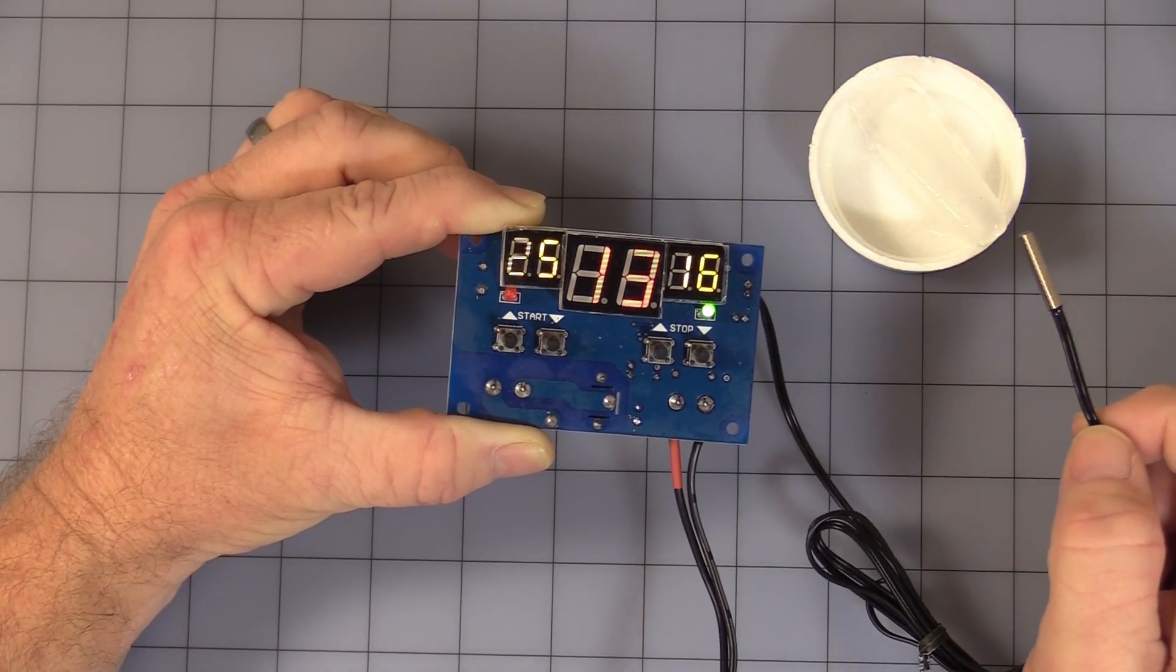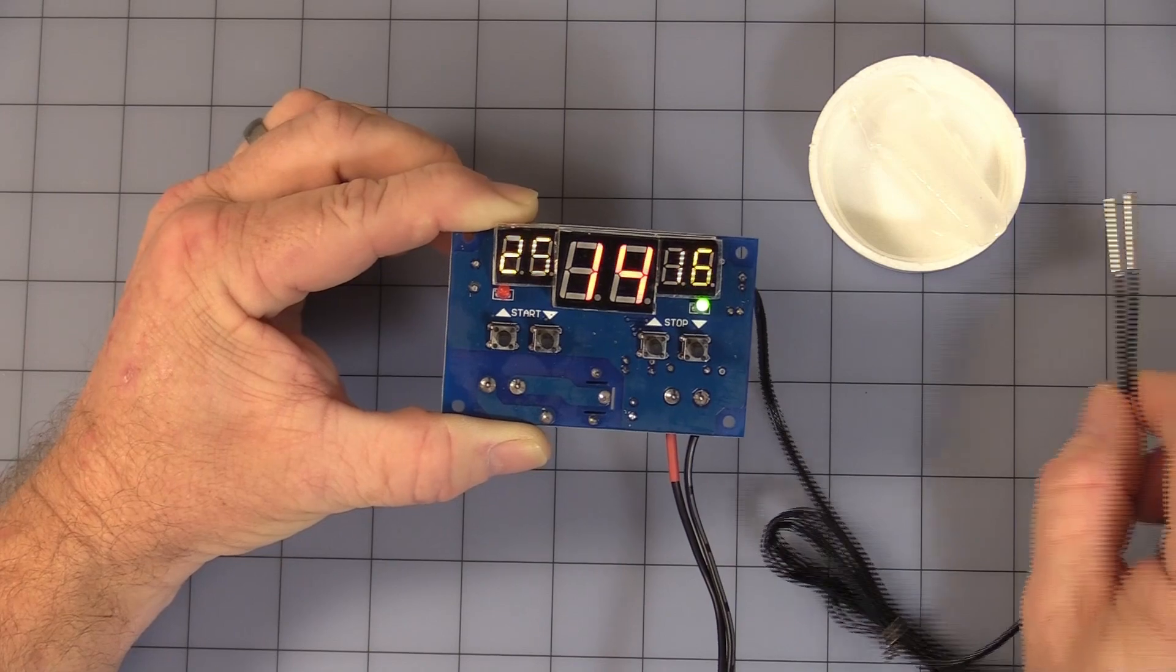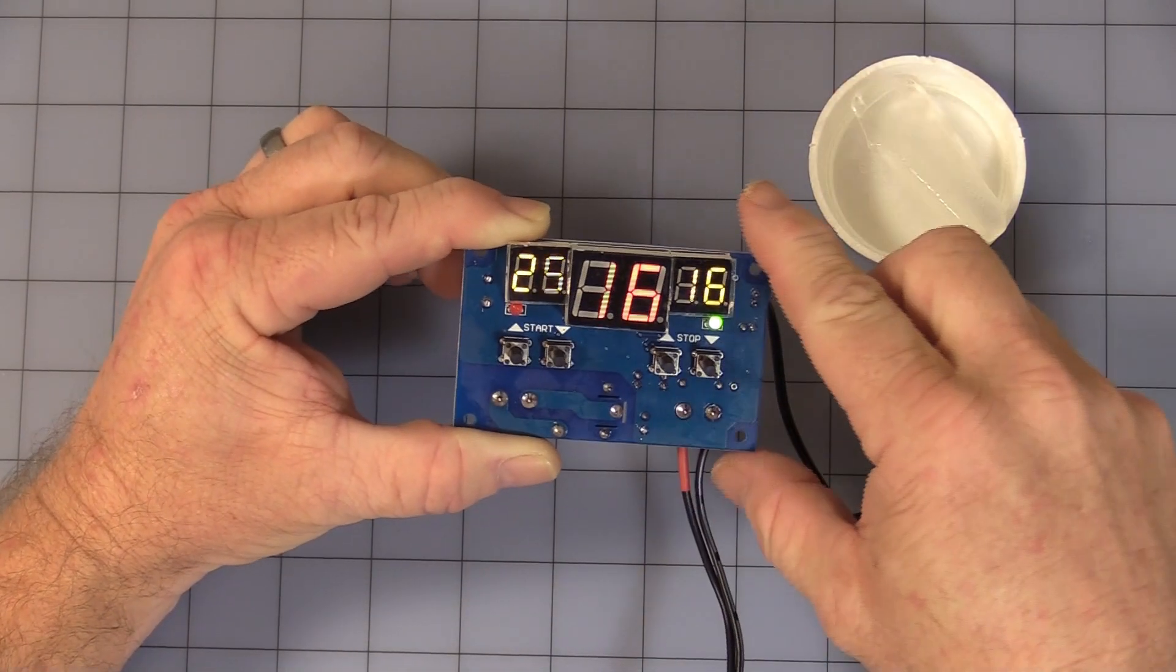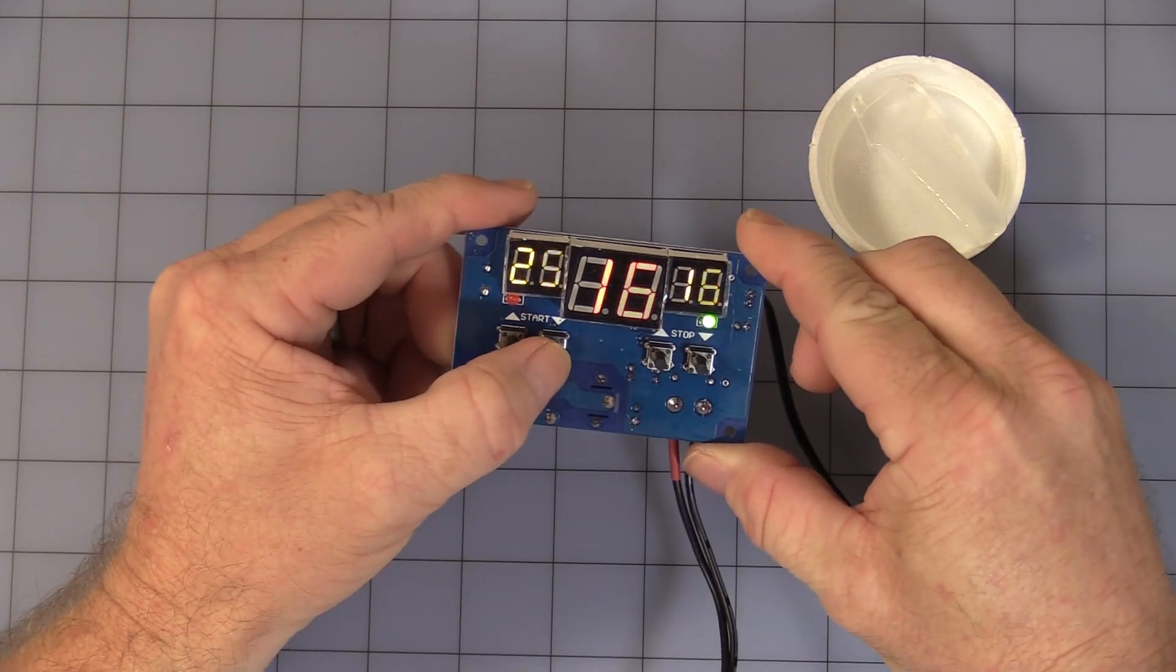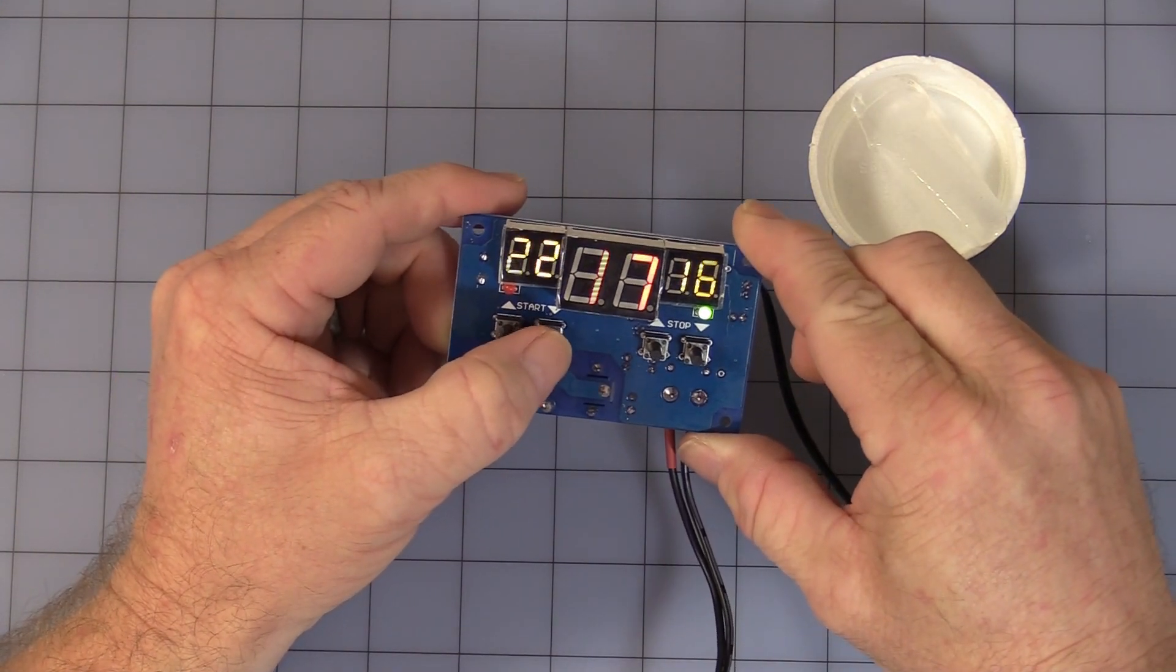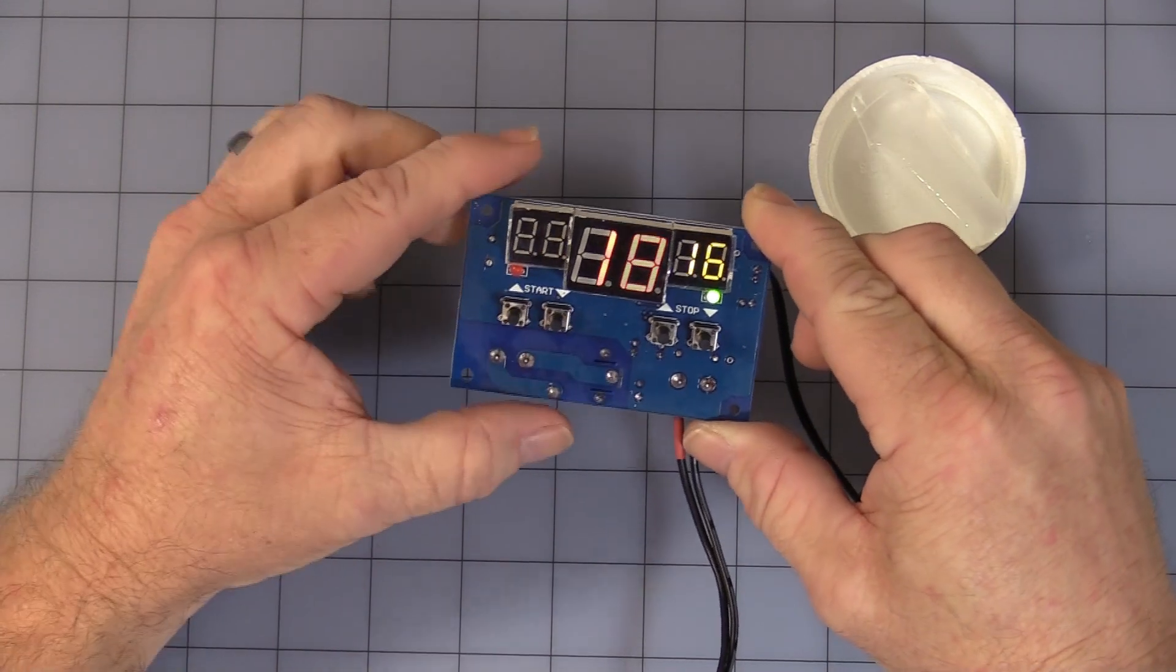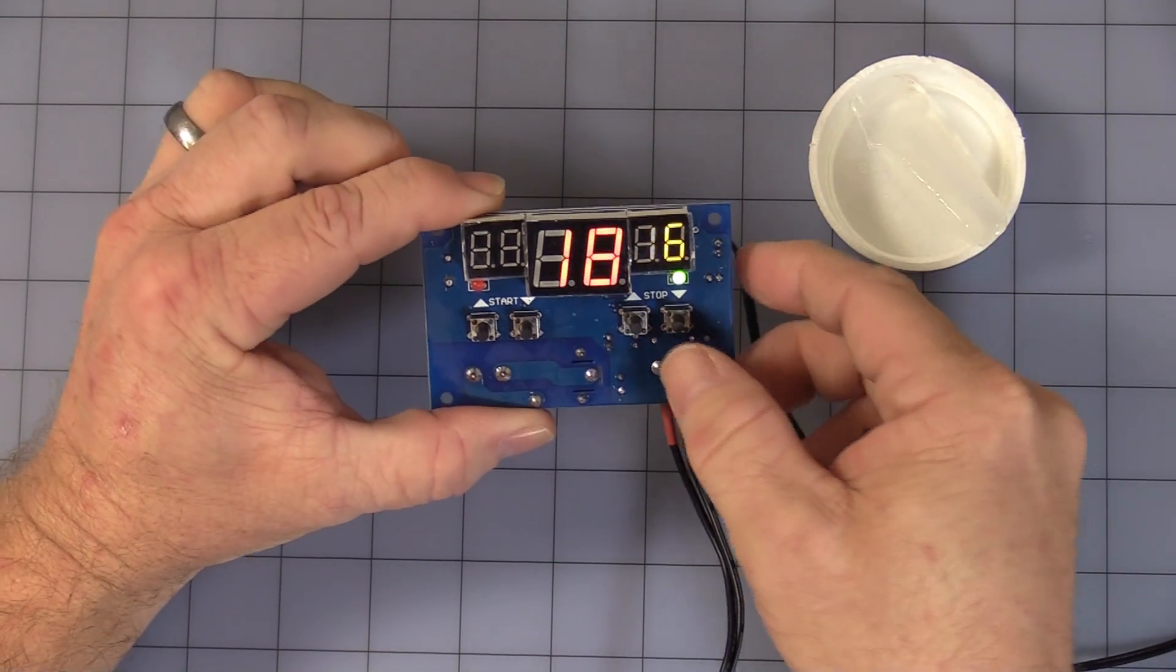Heating mode. The start temperature is lower than the stop, so we will adjust the start temperature to a lower setting. Now we will set the stop to a higher temperature.